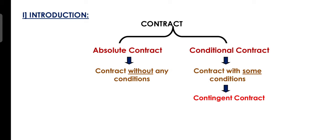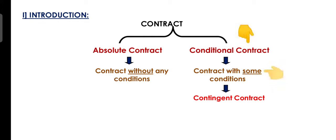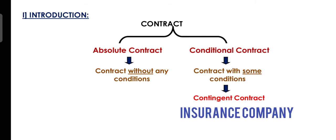There are two types of contracts — Absolute and Conditional. Absolute contracts have no conditions, while Conditional Contracts, as the name suggests, are contracts where parties impose some conditions. Conditional Contracts can also be called Contingent Contracts. An example of a Contingent Contract is an insurance policy. You may have noticed that insurance companies enter contingent contracts with you.